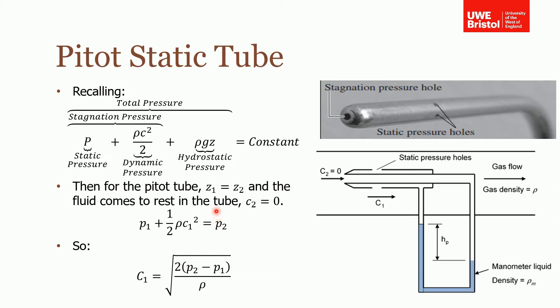So Bernoulli's will reduce to this because the dynamic pressure term will disappear for this side, because c is equal to zero. Therefore, on the outside, the static pressure at one plus the dynamic pressure is equal to the static pressure at two, because the fluid has come to rest.